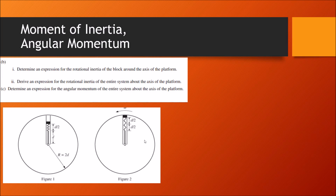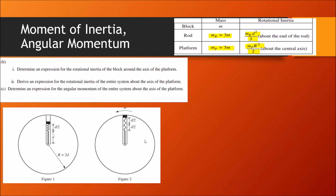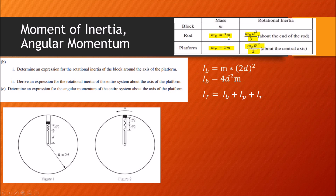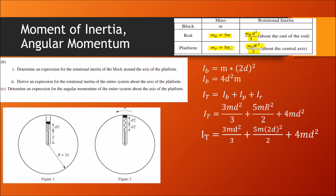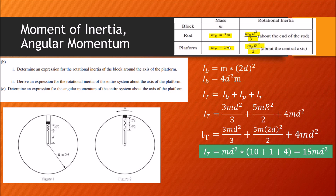Next we find the rotational inertia of the block and the total moment of inertia of the system. For the block, the moment of inertia is mr squared, where r is 2d, giving 4md². Adding the contributions from the rod (mass 3m) and platform (mass 5m) using the values from the given table and simplifying, the total moment of inertia of the entire system comes out to 15md².